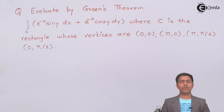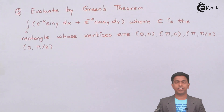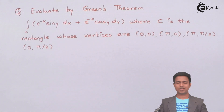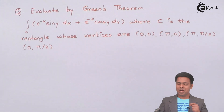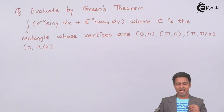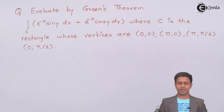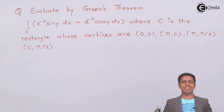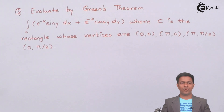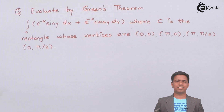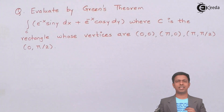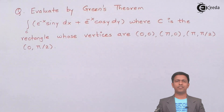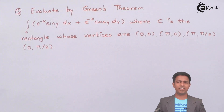Here we have to evaluate the integral of e to the power minus x sin y dx plus e to the power negative x cos y dy using Green's theorem, where the curve C is given as a rectangle whose vertices are given. To evaluate it by Green's theorem, let's write down the statement of Green's theorem and then after drawing the given curve, we can evaluate the integration.